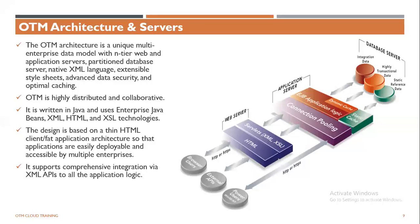For example, if you search for any orders, whenever you log into OTM you see different pages. When you enter any order and hit the search button, that request goes to the application server. The application server creates a connection with the database server, checks the database table, creates an inbuilt query, that query fetches the data, and then the application server shows that information on your UI. That's how it works.